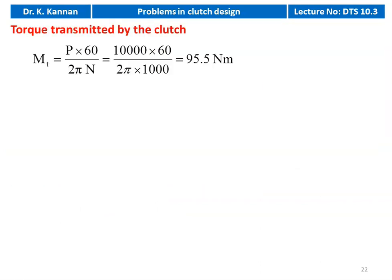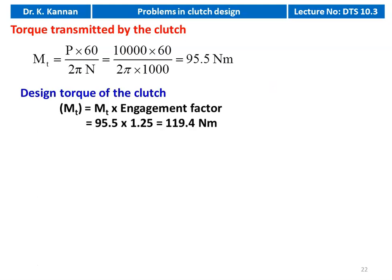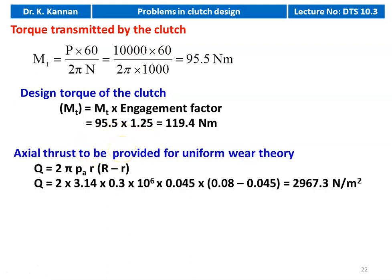We calculate the torque transmitted by the clutch from the given power: MT equals P into 60 divided by 2 pi N, so 10,000 into 60 divided by 2 pi into 1000 equals 95.5 Newton meter. The design torque of the clutch MT equals MT into engagement factor, so 95.5 into 1.25 equals 119.4 Newton meter. The axial thrust for uniform wear theory: Q equals 2 pi PA into small r into capital R minus small r, giving Q equal to 2967.3 Newton.